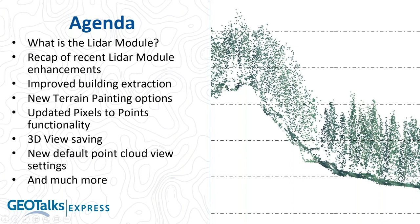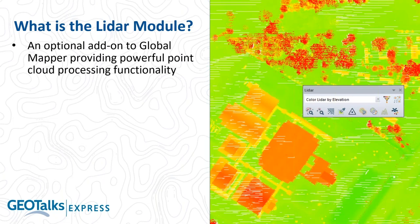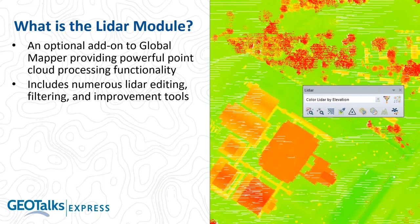The LiDAR module is an optional add-on to Global Mapper. It goes beyond just LiDAR — it works with any type of point cloud data — and provides powerful point cloud processing functionality including tools for editing, filtering, and improving LiDAR data quality. You can apply z-offset corrections, add classifications not in the original data, reclassify points, and extract vector features. It also includes the Pixels to Points tool for photogrammetric point cloud generation.